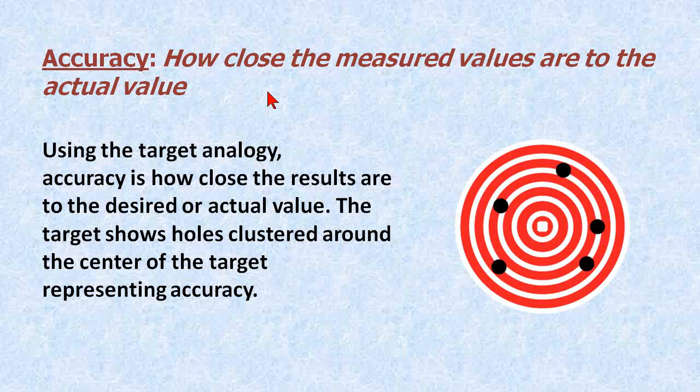Accuracy is how close the measured values are to the actual value. In this target analogy, the desired value is the center of the target, and the five holes are clustered around the center of the target, representing accuracy.